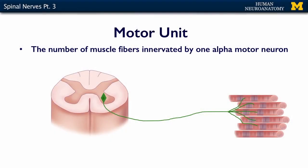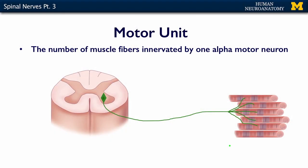A similar kind of representation occurs within the motor system with motor neurons. A motor unit is another definition we use when talking about the peripheral nervous system. It represents one alpha motor neuron and its axon that comes out and innervates different skeletal muscle fibers — so a motor unit is one neuron and the number of skeletal muscle fibers it innervates.